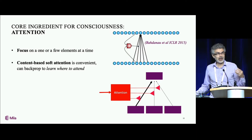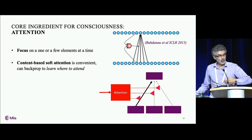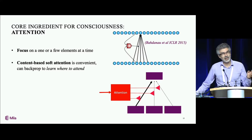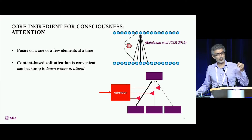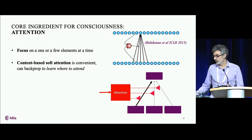Attention is parallel. We're considering all the possible elements in some set, and we're computing a score for each of them in order to decide on which one or which ones we're going to put attention.